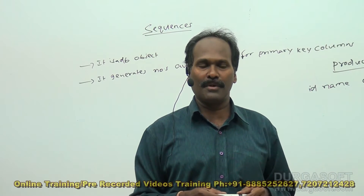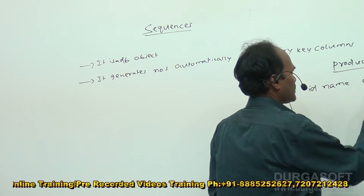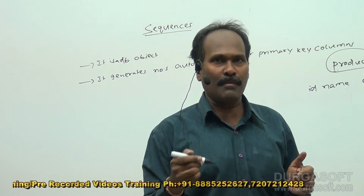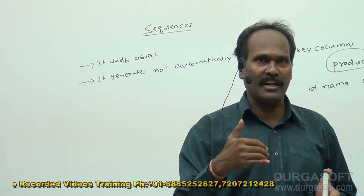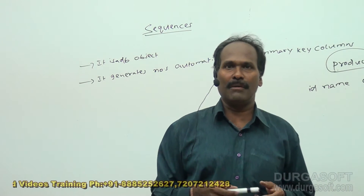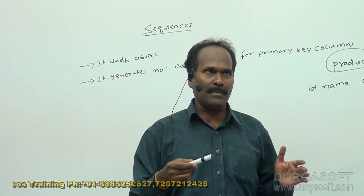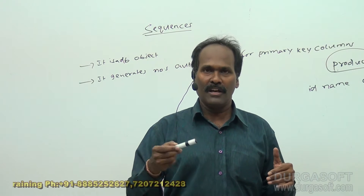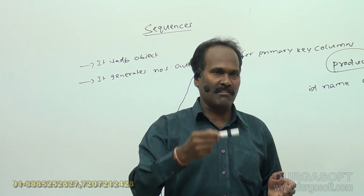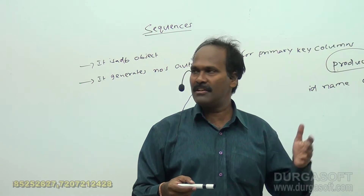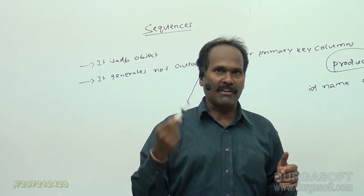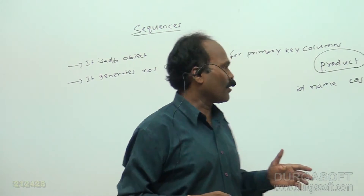The purpose is to generate the numbers. Suppose in a supermarket they maintain one table called product with 1 lakh products. Manually giving product numbers for each and every product is difficult. Instead, the numbers can be automated — they can be taken from a sequence. If you are giving numbers manually, sometimes you may not be maintaining the exact sequence. Like after insertion of 1, next 2, next 3 — we cannot maintain this sequence properly. So instead of that, to maintain the numbers properly, we make use of sequences.